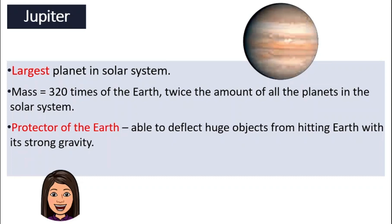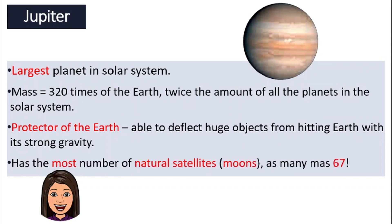Jupiter is also our hero — it protects the Earth. Because of its enormous size, Jupiter has a very strong gravitational pull. So any huge objects flying toward Earth that are about to hit it will be deflected by Jupiter. Its strong gravity deflects the object and protects Earth from being hit. Jupiter also has the most number of moons — 67 natural satellites orbit around Jupiter, which we will talk more about in our coming topics.